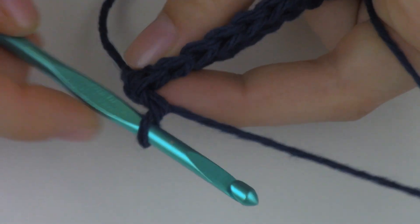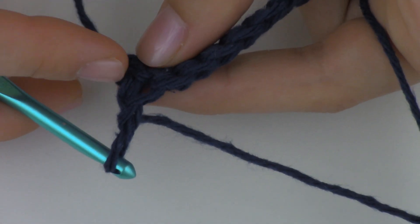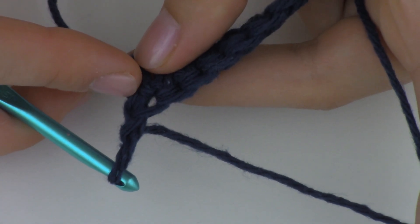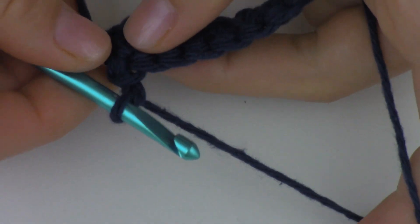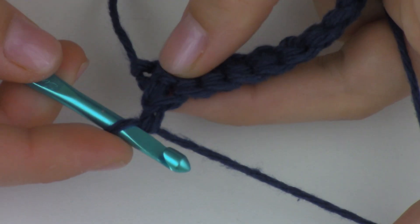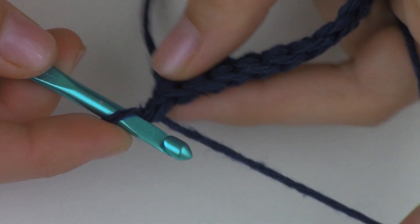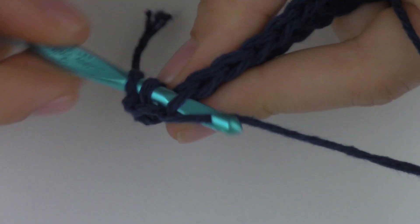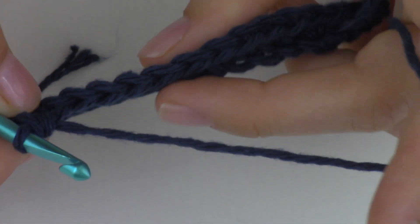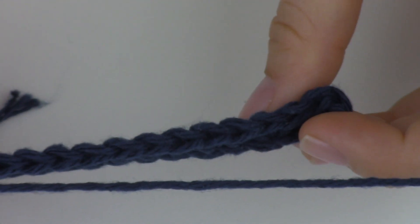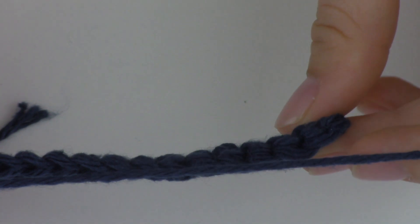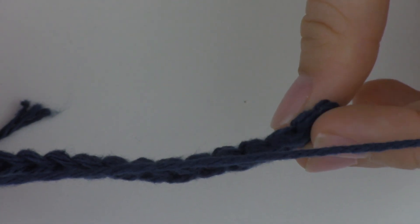So we ended by single crocheting 2 together on this side. So that is what we're going to continue to do. In the next row we are going to start by what we finished with. So since we finished with single crochet 2 together, that's what we're going to do in the next row. Now I'm going to single crochet all the way down into the back loop only, and I'm going to put 2 single crochets in the very last stitch.